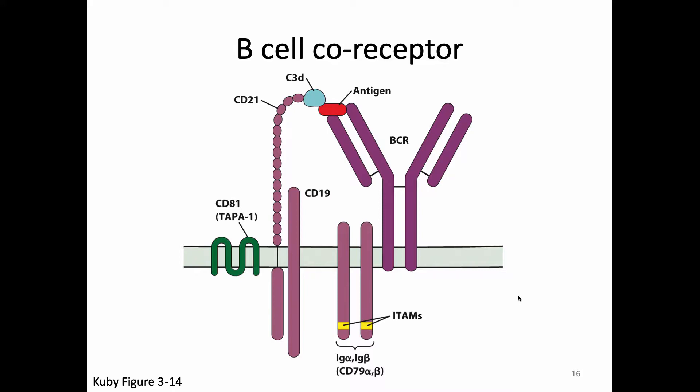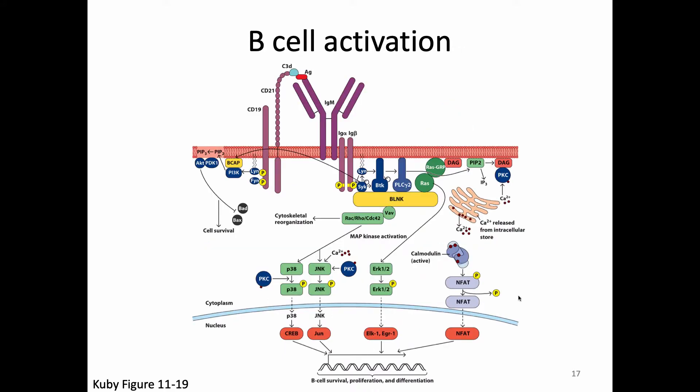Once signaling happens, the kinase phosphorylates the ITAMs — and the signaling pathway that follows looks largely identical to what you've seen for T cells. Blnk is closely related to LAT; Lyn and Fyn are family members of LCK and do the same thing. The pathway structure is conceptually the same, which is why I only really have to go through it once. The moral of the story is it's the same as what you've seen before.